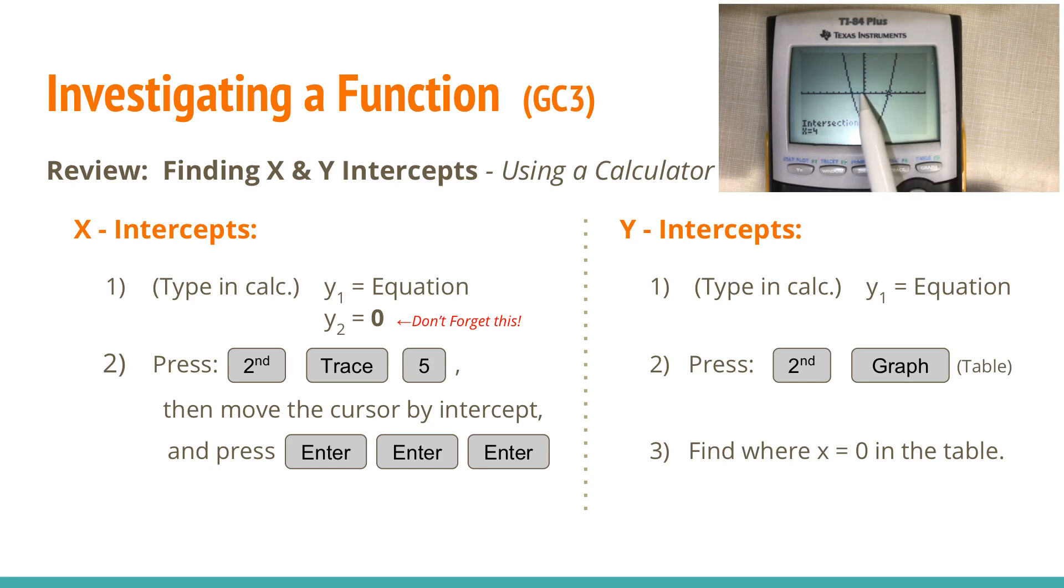If you ever want to find a y-intercept, you just need to press second graph, and then when you press second graph, all you're going to look for in the table is the zero value for x, and there's your y-intercept at zero, negative eight. That's all there is.